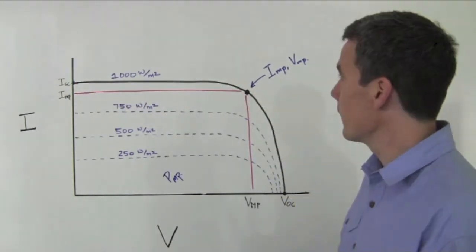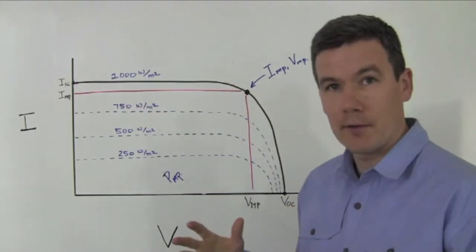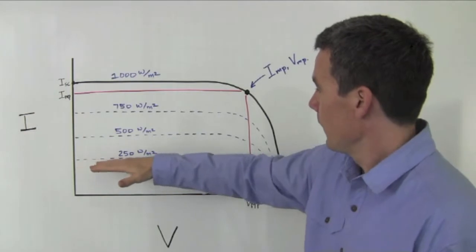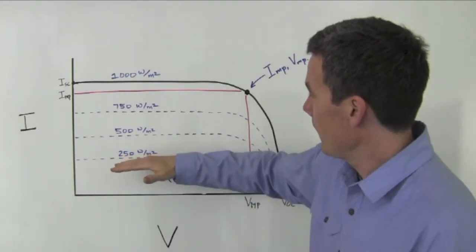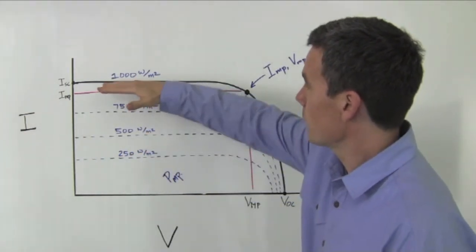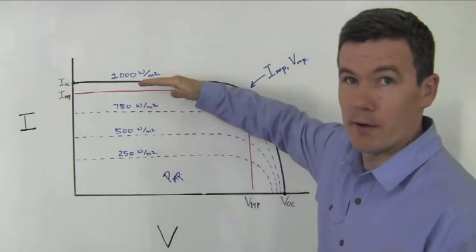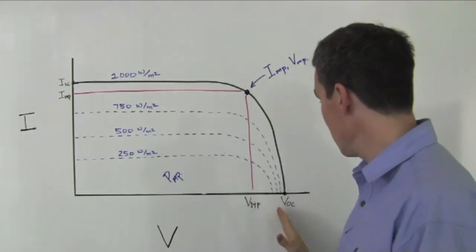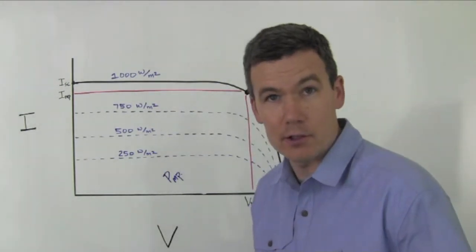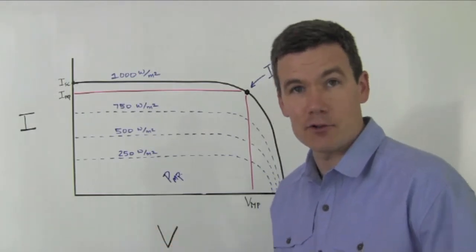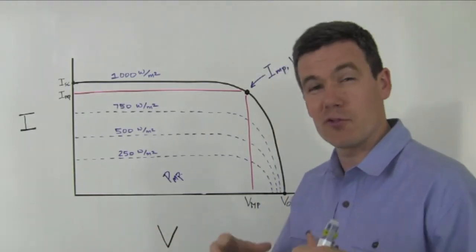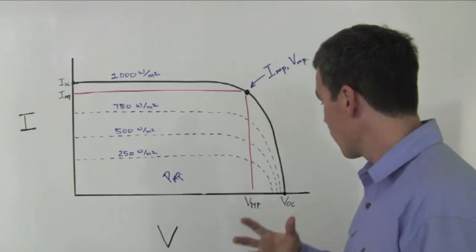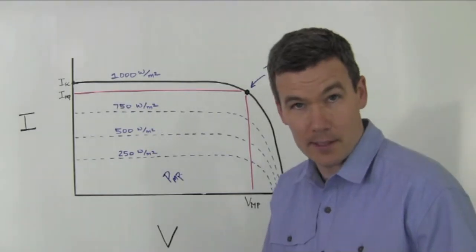Now this current varies with the voltage throughout the day. We start at lower irradiance through the day and as irradiance builds, this curve gets taller. It doesn't necessarily change the open circuit voltage as the irradiance changes. The open circuit voltage is relatively constant throughout the day no matter what the irradiance is.